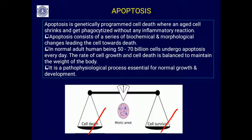Apoptosis is different from necrosis and inflammation, which also lead to cell death. It consists of a series of biochemical and morphological changes in the cell leading towards death. In a normal adult human being, 50 to 70 billion cells undergo apoptosis every day. The rate of cell growth and cell death is balanced to maintain body weight, making apoptosis an essential pathophysiological process for normal growth and development.